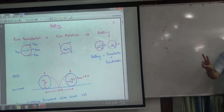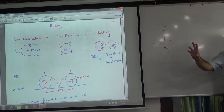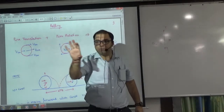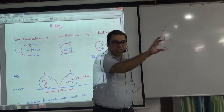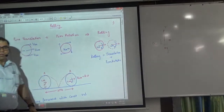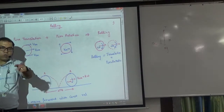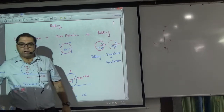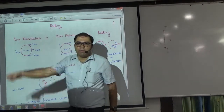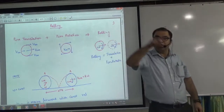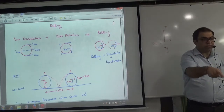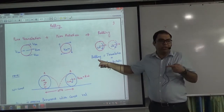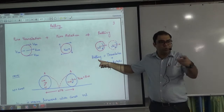If you change position and your body is just sliding or linearly moving forward, that is pure translation. If the body is just spinning on its fixed axis, that is pure rotation. Now imagine the tire is both going forward and its particles are rotating. This means rolling. Both motions are happening together.